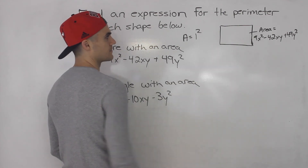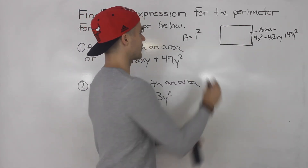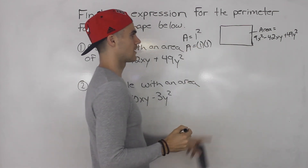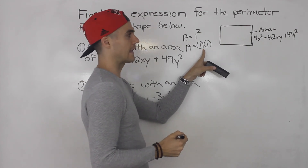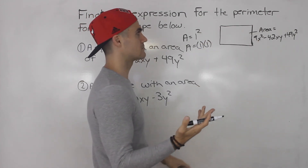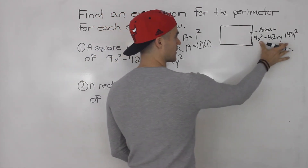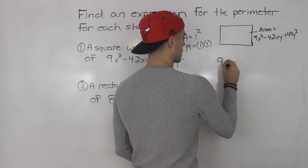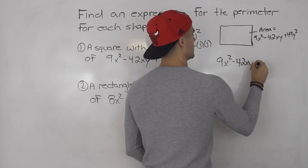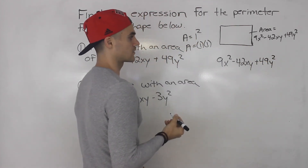So if we could take this area expression and factor it into two brackets that are multiplying each other, we can have an expression for the lengths. Then we could add up all the lengths, or just multiply by four because it's a square, to get the perimeter. So we have to take 9x squared minus 42xy plus 49y squared and factor it.